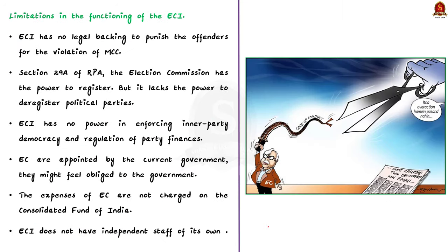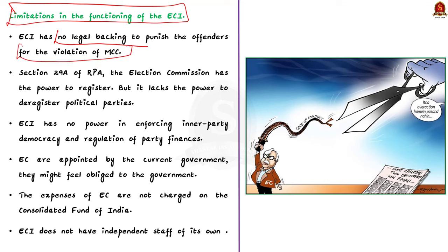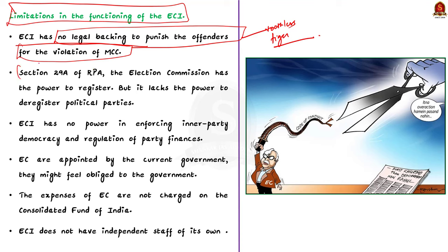Having addressed the first part of the question, now let us move on to the second part — the limitations in the functioning of ECI. Firstly, the ECI has no legal backing to punish offenders for violation of the MCC, which effectively makes it a toothless body. Then, the ECI lacks the power to deregister a political party — under Section 29A of the RPA, the Election Commission has the power to register but lacks the power to deregister political parties. The ECI also has no power in enforcing inner-party democracy and regulation of party finances.